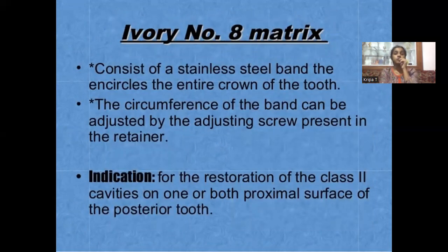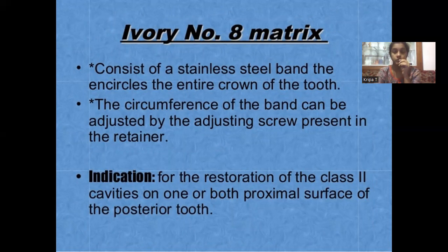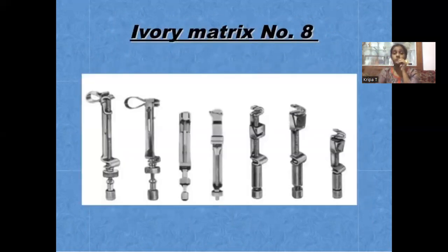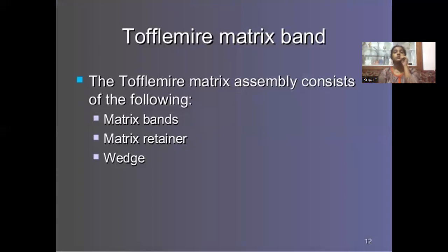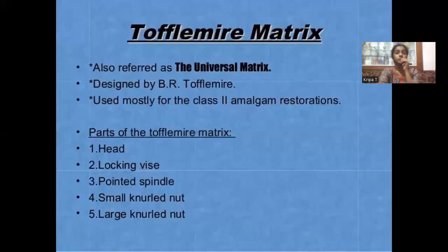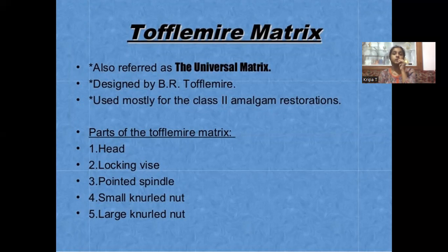Ivory number 8 is used with a stainless steel band which encircles the entire crown. The circumference of the band can be adjusted by a screw in the retainer. You can use it to restore class 2 cavities on one or both aspects of the tooth. Next is the universal matrix system — the Toffelmeyer — which includes matrix band, retainer, and wedge. This was introduced by B.R. Toffelmeyer and is widely used for class 2 amalgam.